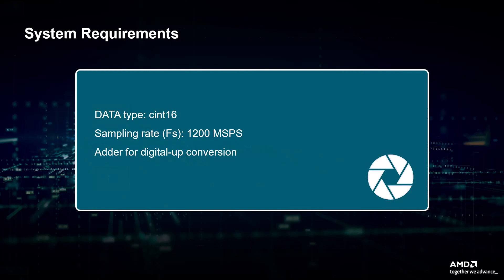During the requirements gathering stage of design analysis, the input and output data types, coefficient types, number of taps, sampling rate, and the kernel function need to be identified. Here, we are using a simple example of a custom kernel with an adder function, but you could apply the same steps for more complex kernels.